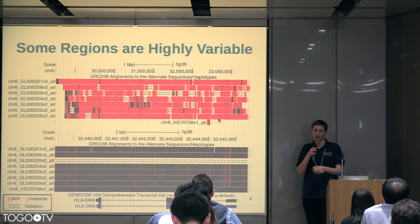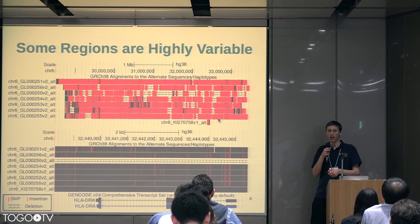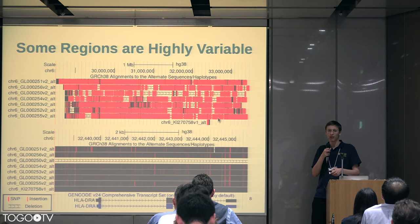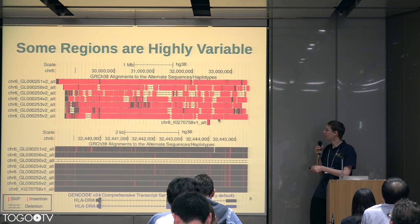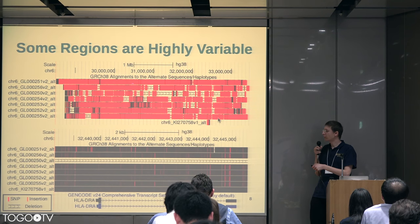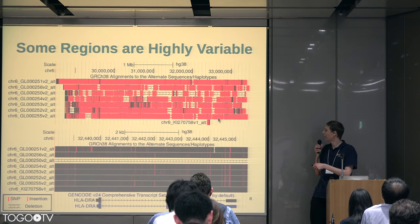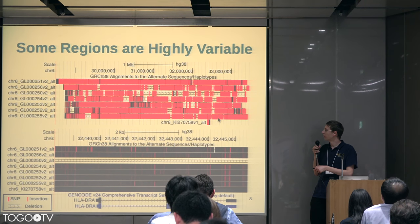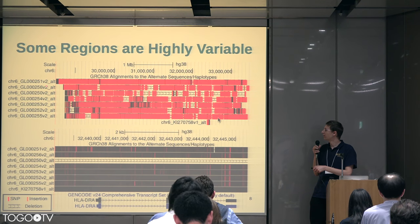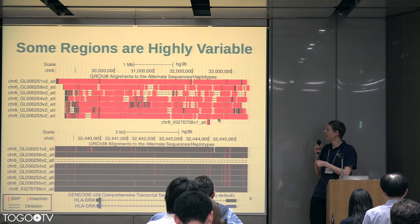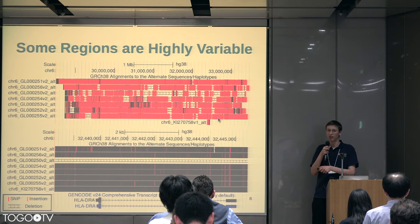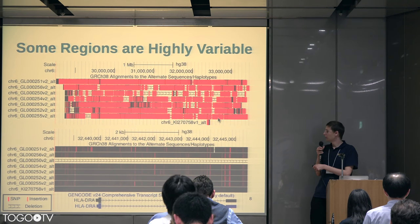These are like different versions of the region that are distributed with the assembly. And you can see that all these different versions are very different from each other. There's a lot of big gaps in this multiple sequence alignment, and everywhere that they are aligned is just completely red with these little red lines that indicate SNPs.